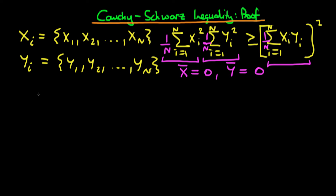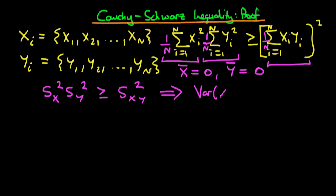Stated in this form, the Cauchy-Schwarz inequality actually says that the sample variance of x times the sample variance of y must be greater than or equal to the sample covariance of x and y, all squared. That's actually quite a useful result. And even though this isn't a direct proof of this, you can also show that this holds in the population — hence, the variance of x times the variance of y is greater than or equal to the covariance of x with y, all squared.